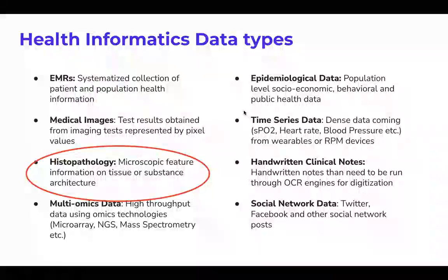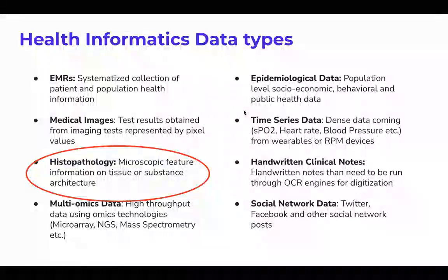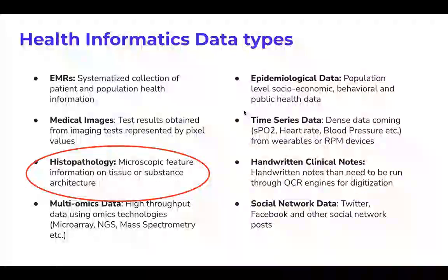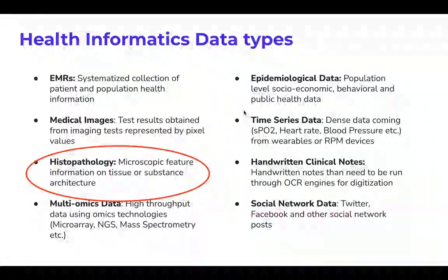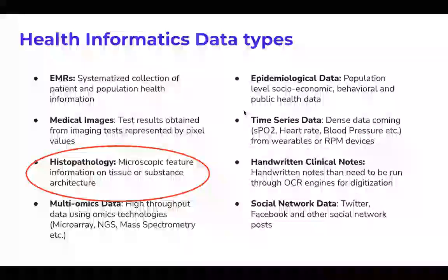Next is histopathology. Our body consists of organs, tissues, and cells. Microscopic tissue sections are what we call histology. The microscopic appearance of a particular tissue in the case of disease versus in a healthy person is different. Identifying those microscopic differences using machine learning techniques is what falls under pathological health informatics.